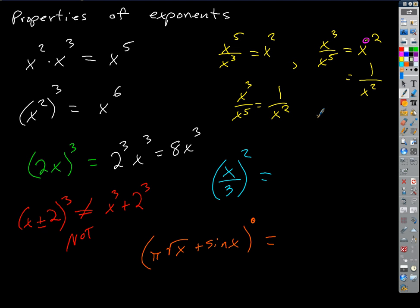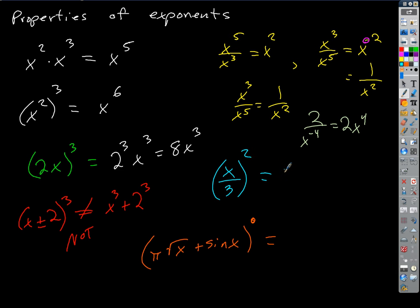What if I have something like 2 over X to the negative 4? The negative exponent on the bottom becomes positive on the top, so it would be 2X to the positive 4. And if I have a quotient to a power — (X/3) squared — that's going to be X squared over 3 squared, which is X squared over 9.